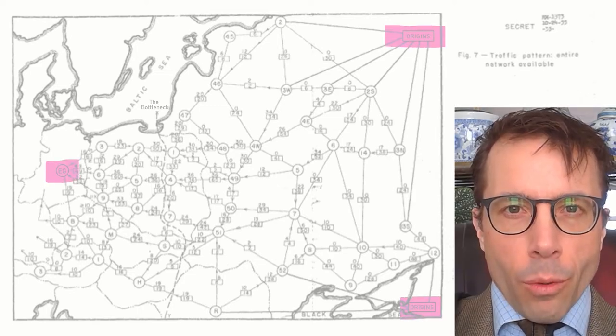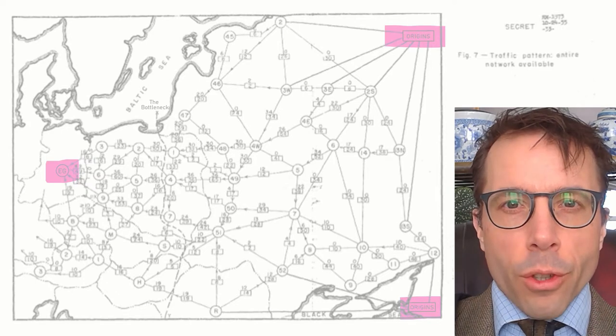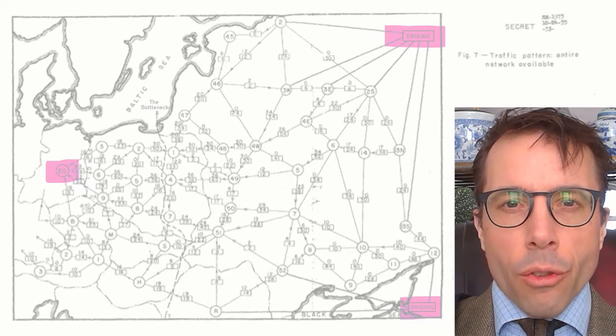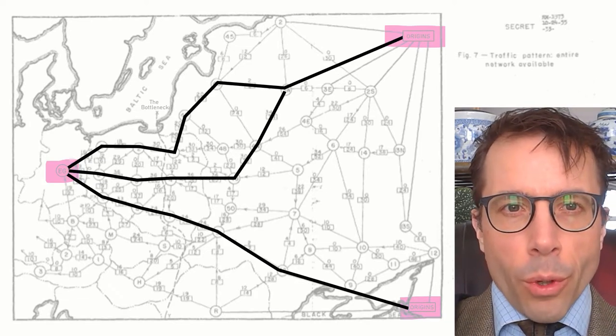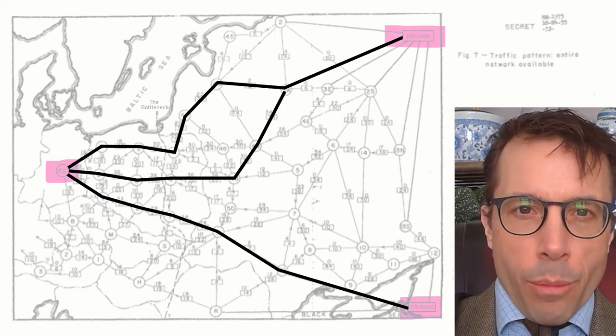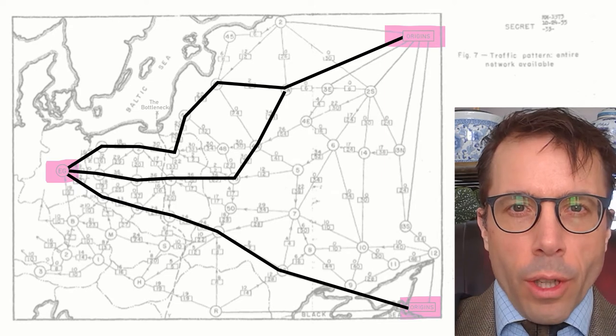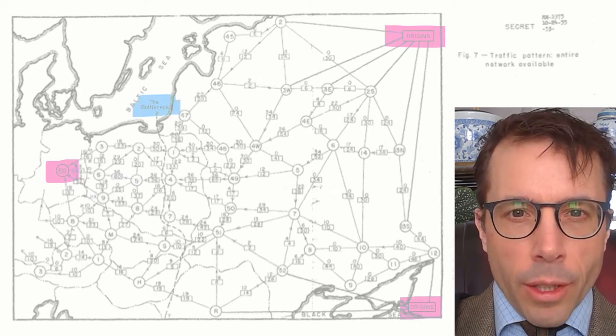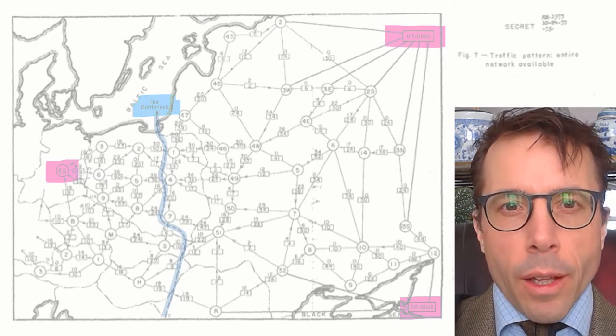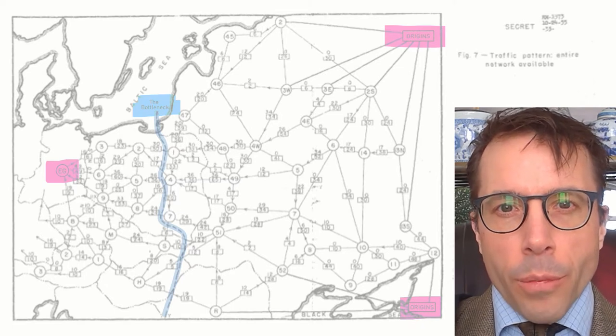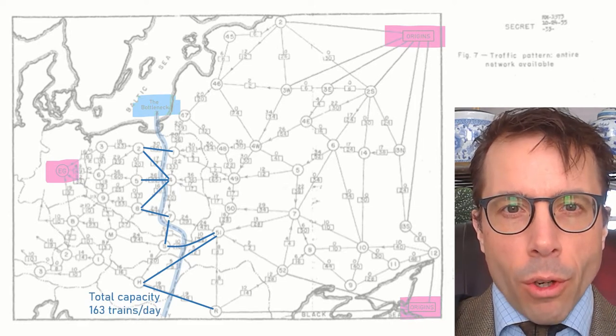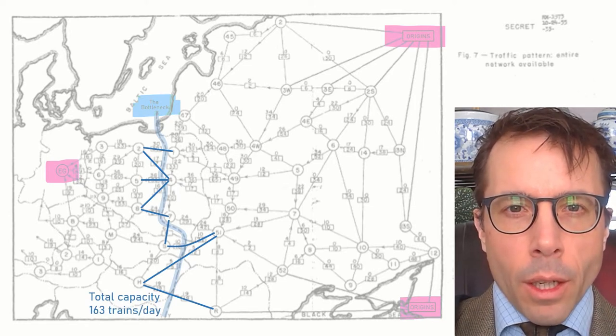Their concern was a potential invasion of Western Europe by the Soviet Union via East Germany, and to carry out such an invasion the Soviet Union would need to transport oil from its refineries in the east and southeast. This diagram from the RAND Corporation has a dotted line down the middle which they're labeling as the bottleneck. This line divides the map in two, it separates East Germany from the oil refineries in the east, and so every train load of oil has to cross this blue dotted line at some point.